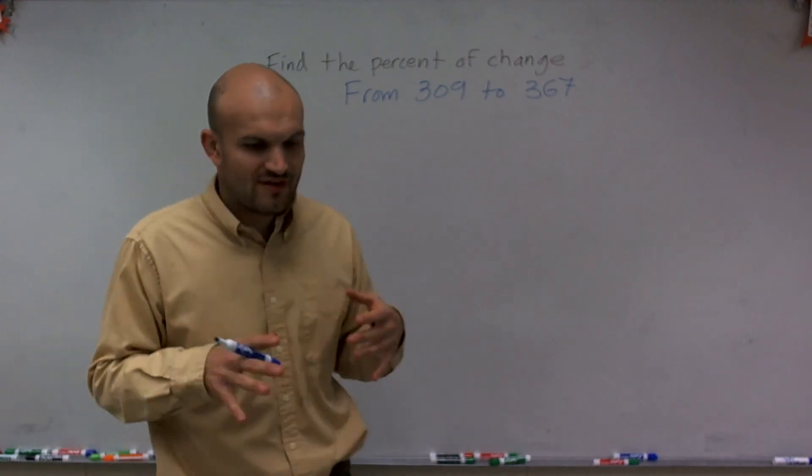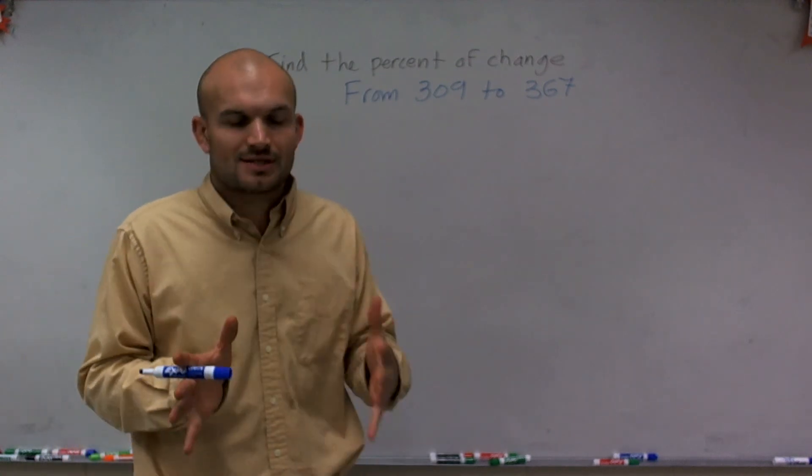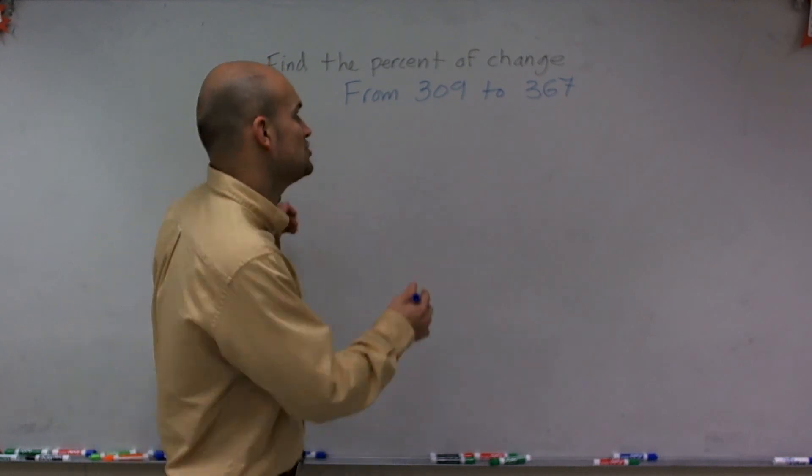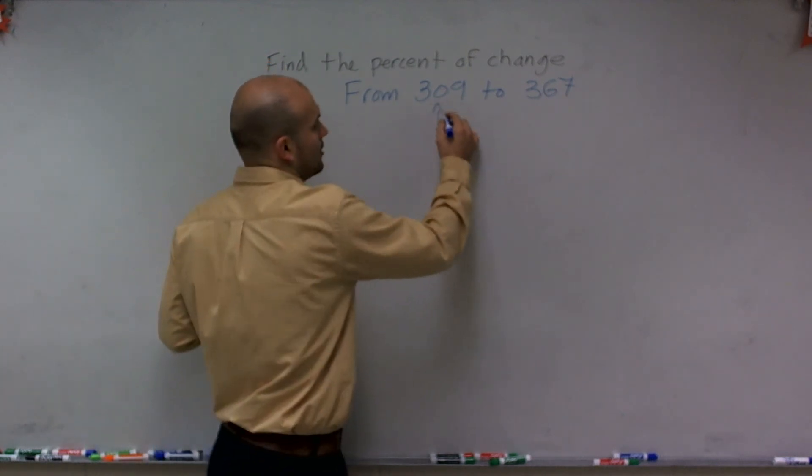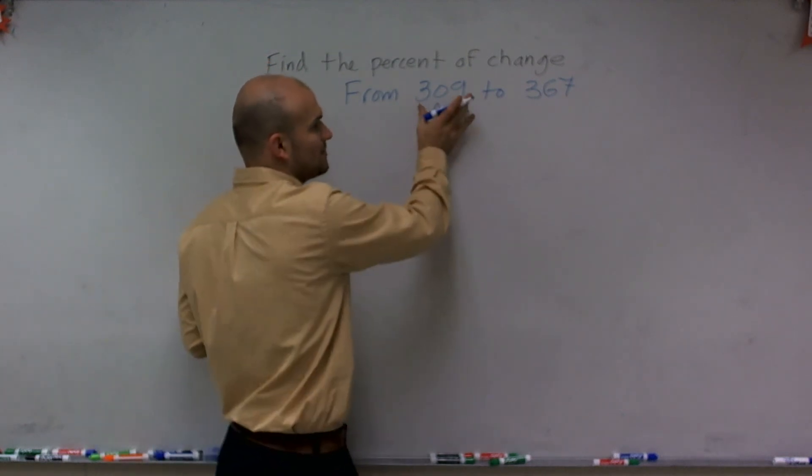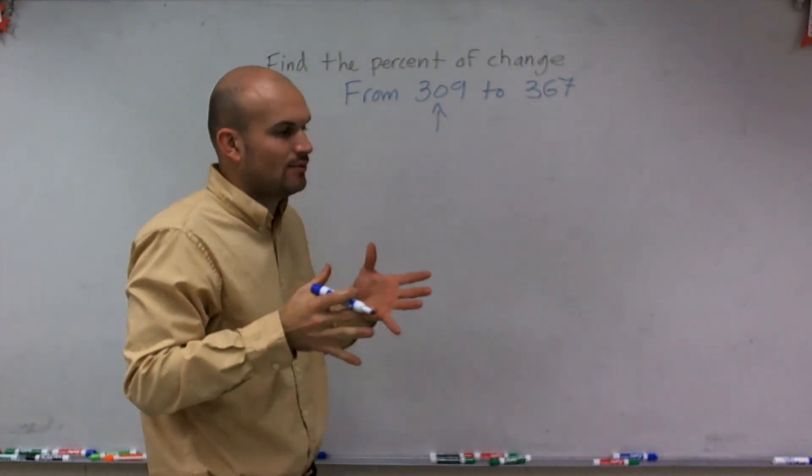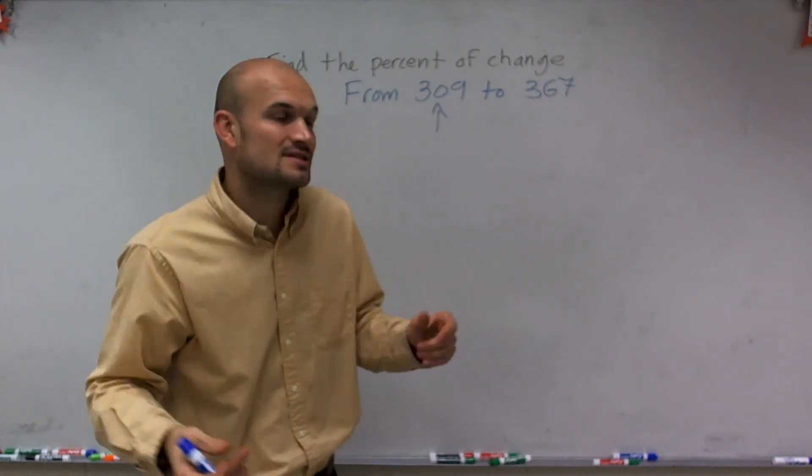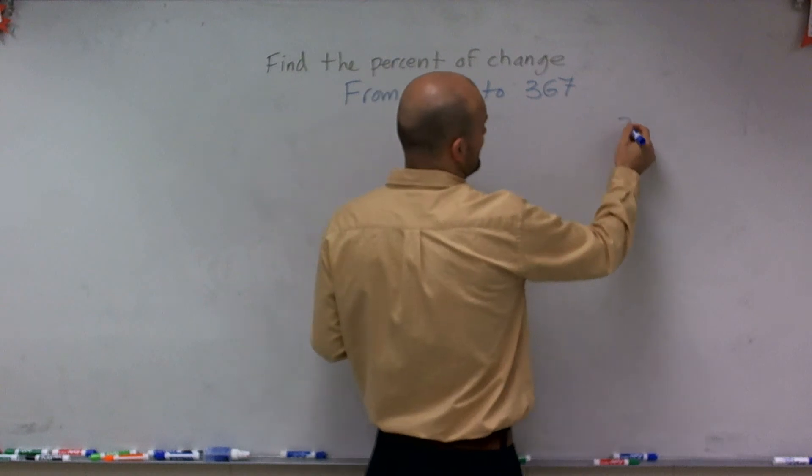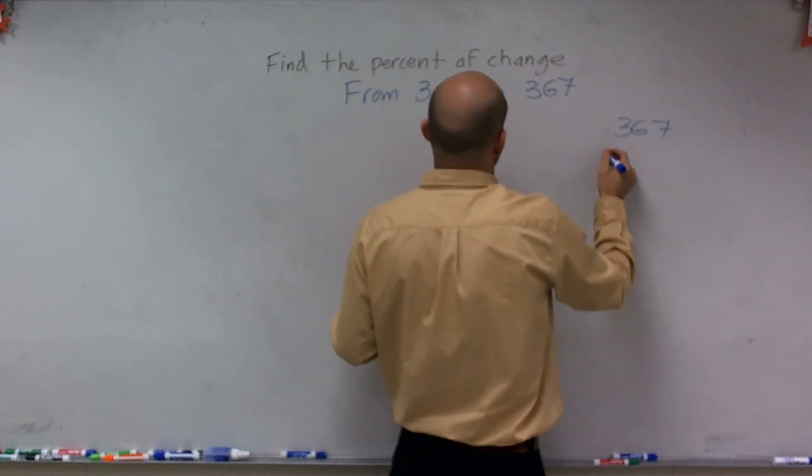So what I want to do to find the percent of change, what we need to do is look at our initial amount. And our initial amount is going to be 309. So to go from 309 to 367, the change is going to be the difference of the two. So what I can do to find the difference is I can just subtract my two values.